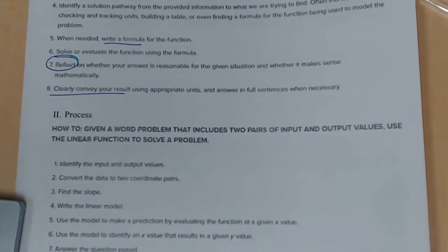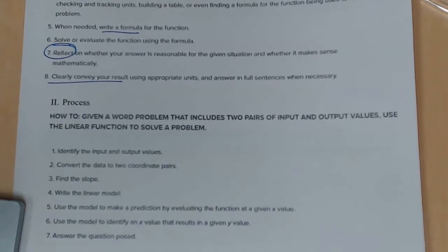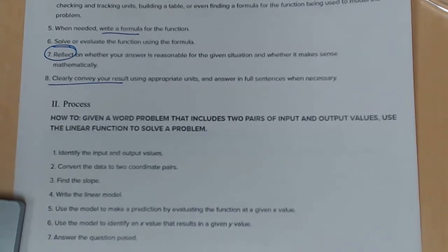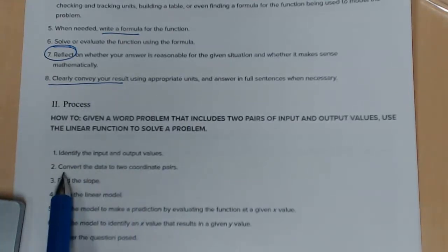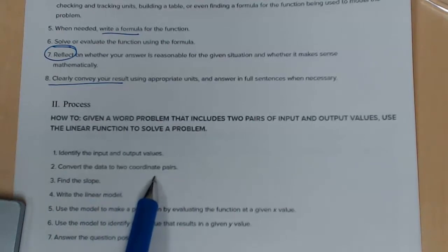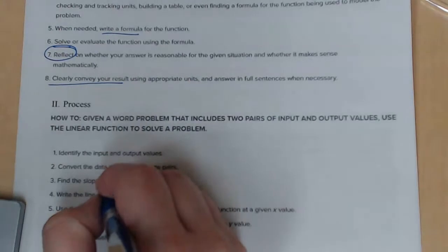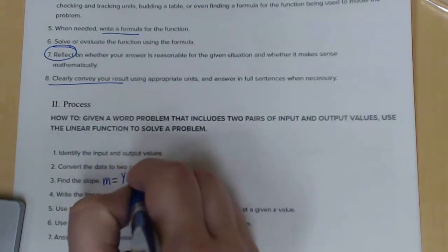How to, given a word problem that includes two pairs of input and output values, use the linear function to solve a problem. So first, we're going to identify the input and output values. Maybe make a list of the values it gives us. We're going to convert the data to two coordinate pairs. Look familiar? Find slope, so we can't forget our handy-dandy slope formula.